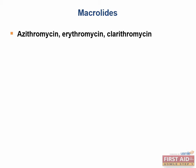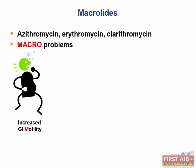These drugs have a number of adverse effects summarized by the mnemonic MACRO. The M stands for GI motility issues — there is an increase in gastric motility with these drugs. Decreased GI motility, as seen in diabetes, is called gastroparesis, and erythromycin can actually be used to treat gastroparesis because of this very side effect.